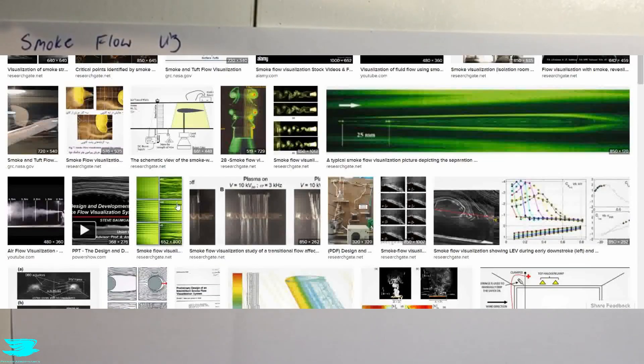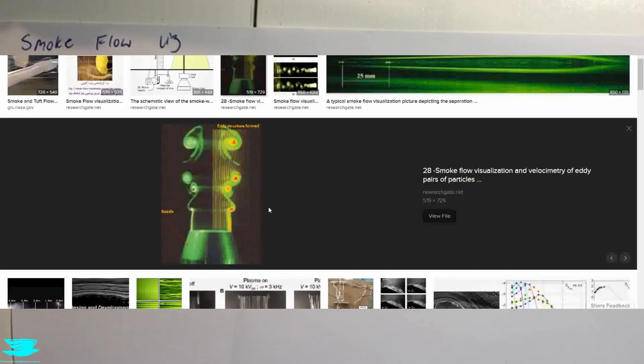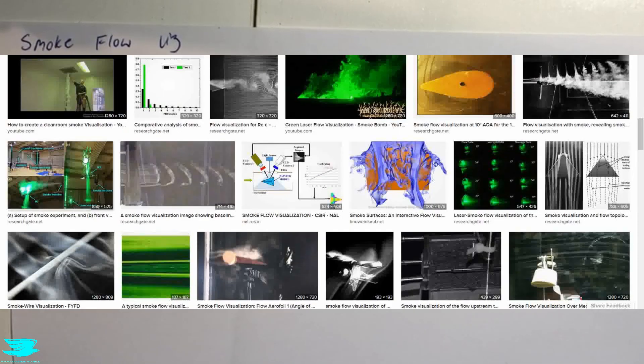In addition to just having regular smoke flow visualization, you can also illuminate it, so you can put a laser through it. For example here, here, and even this picture here we have a laser sheet going through it and we can illuminate these structures even better. Now there are a few things to keep in mind when doing this.